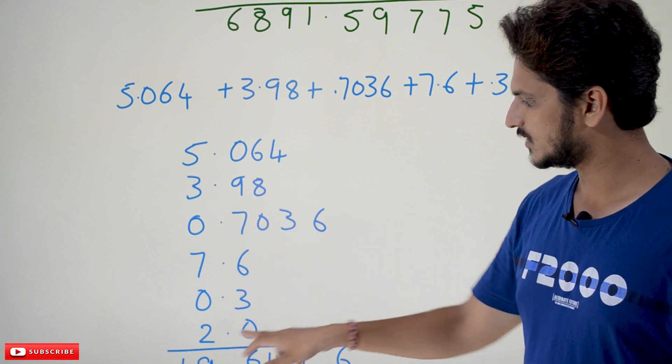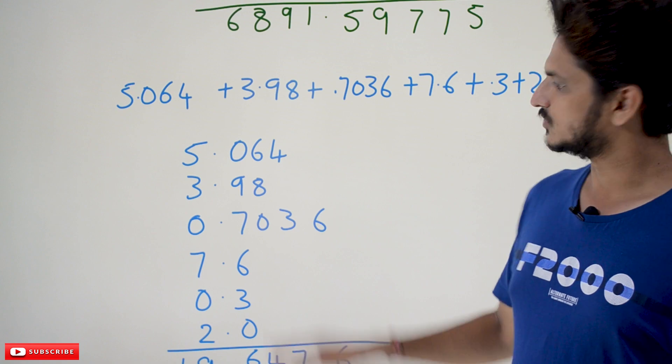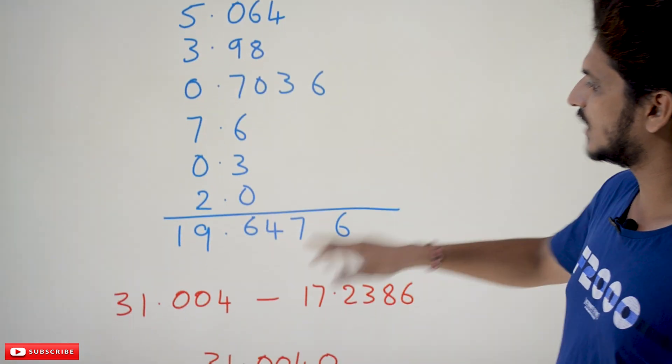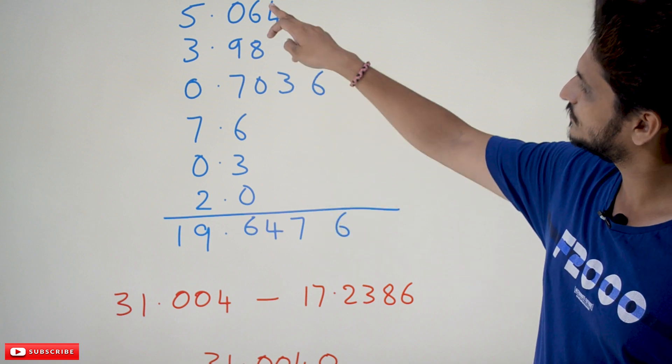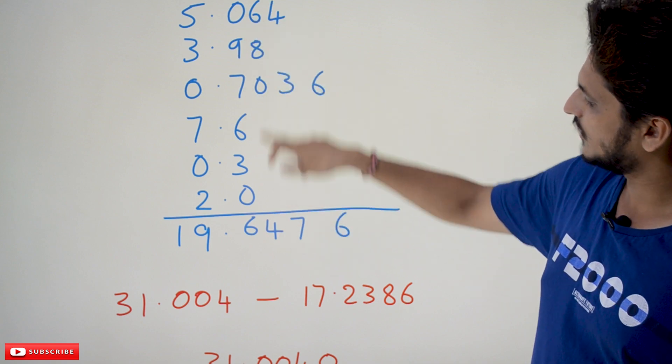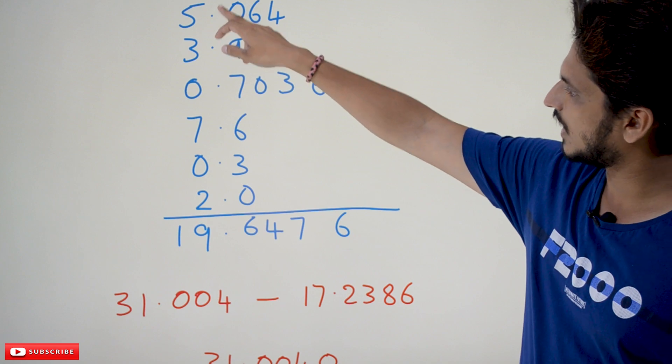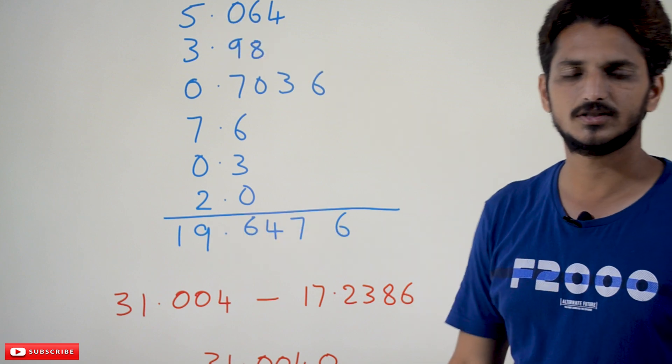Do the addition. What's the value? 19.6476. 6 plus 4 plus 3 is... 7 plus 8 plus 6 is 14... and if you add it 16, and if you add it 19. This is how we do the addition.